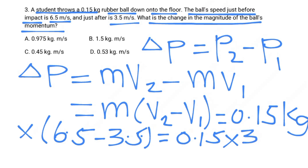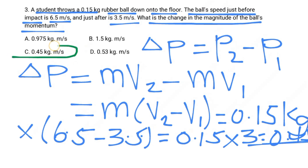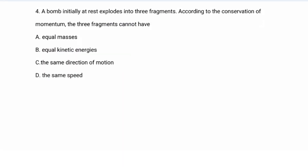We don't need the direction, just the magnitude. So 0.15 times 3 equals 0.45 kilograms·meters per second. This answer is found in choice C.